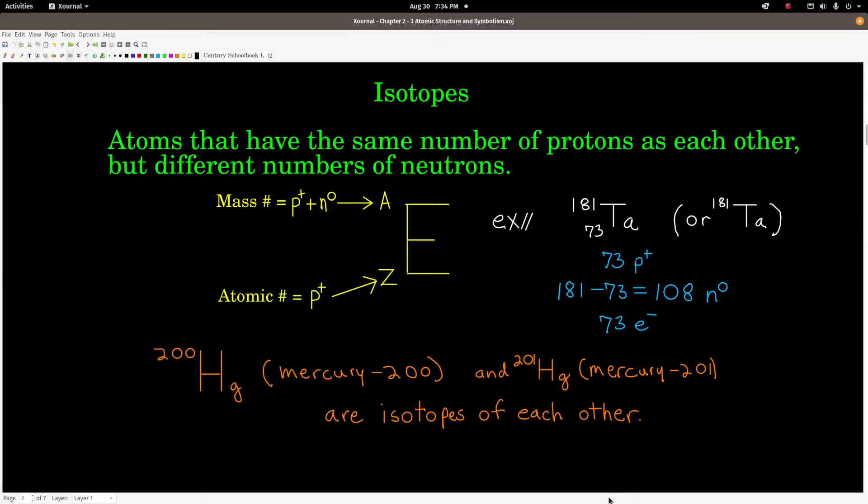Isotopes. The definition of an isotope, or isotopes, it's a relationship, is that they are atoms that have the same number of protons as each other but different numbers of neutrons. Now, it ends up that the one and only thing that determines which element any given atom is, is how many protons are in its nucleus. Everything else can change and it can still be the same element, but the number of protons has to stay the same. So, for example, any atom in the universe that has six protons in its nucleus is an atom of carbon, regardless of how many neutrons or electrons it has.